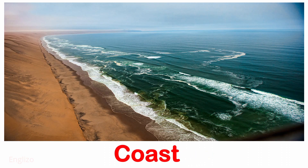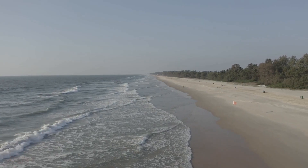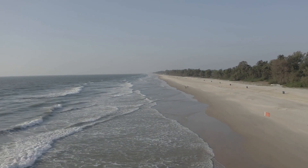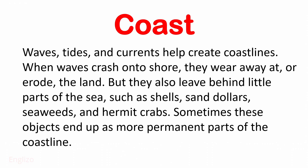Next is Coast. Waves, tides, and currents help create coastlines. When waves crash onto shore, they wear away at or erode the land. But they also leave behind little parts of the sea such as shells, sand dollars, seaweeds, and hermit crabs. Sometimes these objects end up as more permanent parts of the coastline.